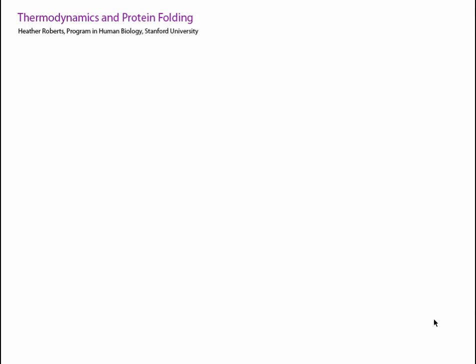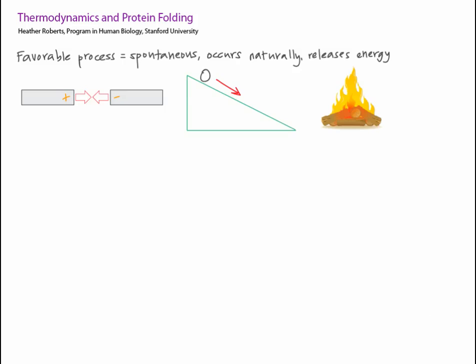Throughout these tutorials, we've talked about favorable interactions. Favorable interactions or processes are those that occur spontaneously or naturally. For example, two opposite magnets spontaneously come together, rocks spontaneously roll downhill, and ignited wood spontaneously burns in the presence of oxygen. This doesn't mean that these processes happen quickly, it only means that they would happen if they could. All spontaneous processes release energy.